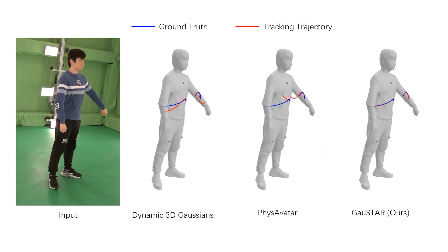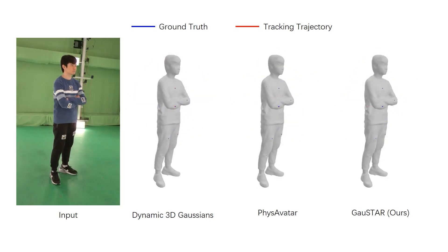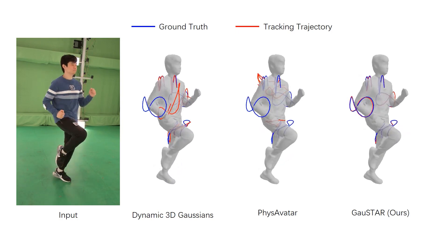To evaluate tracking quality, we attach April tags on the human body to provide ground truth. Gaustar achieves significantly more accurate tracking results.